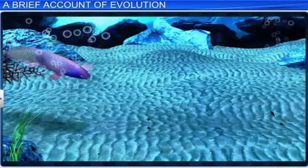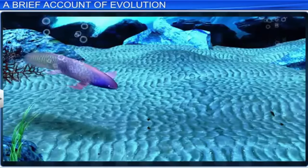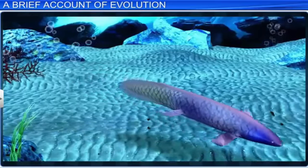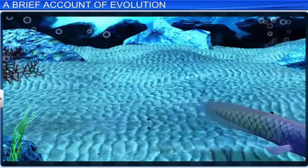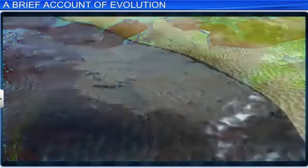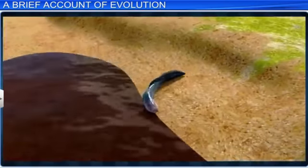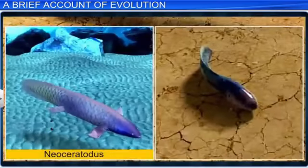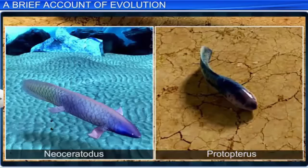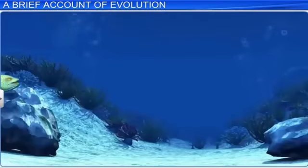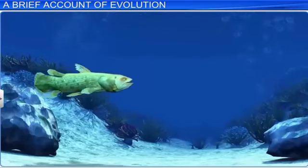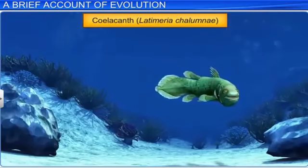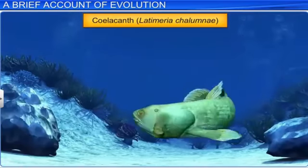Meanwhile, in the Carboniferous period, around 350 million years ago, there were also fish with stout and strong fins who could move equally well on land as well as in water. These were called lungfish. For example, Neoceratodus and Protopterus. Another important fish of this period were the lobe fin fish, which later evolved as amphibians. Coelacanth is a lobe fin fish which was thought to be extinct earlier, but is now considered a living fossil.